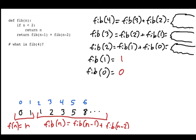Now that I've solved the base cases, I can work my way back to Fibonacci of 4. Fibonacci of 1 is 1, Fibonacci of 0 is 0, so Fibonacci of 2 is 1 plus 0, which is 1. That tells me what Fibonacci of 2 is. Then Fibonacci of 1 is 1, so Fibonacci of 3 is 2. Working back: Fibonacci of 3 is 2, Fibonacci of 2 is 1, so Fibonacci of 4 is 3.